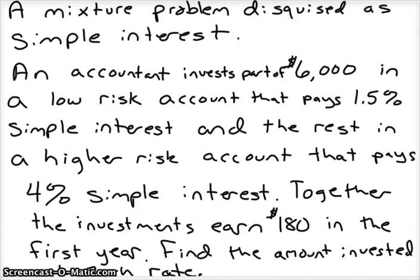If you remember my mixture problem before, here is a mixture problem disguised as simple interest. An accountant invests part of $6,000 in a low-risk account that pays 1.5% simple interest, and the rest in a higher-risk account that pays 4% simple interest. Together, the investment earns $180 the first year. Find the amount invested at each rate.